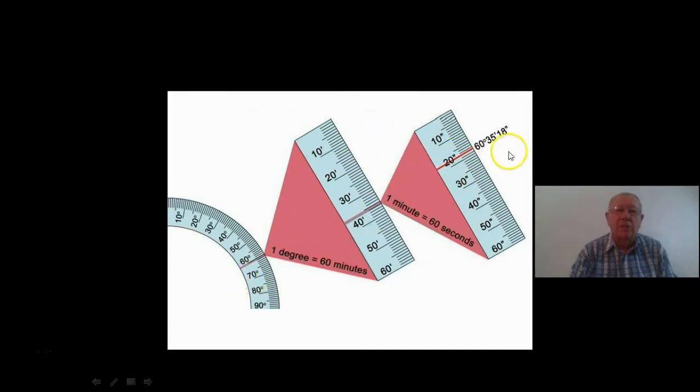What that means is that this angle here would be measured at 60 degrees, 35 arc minutes, and 18 arc seconds. So that's the kind of small angle that we're looking at when we're looking at the parallax angle for stars.